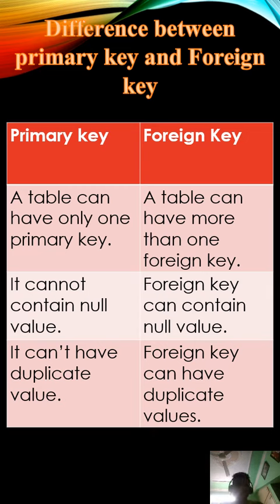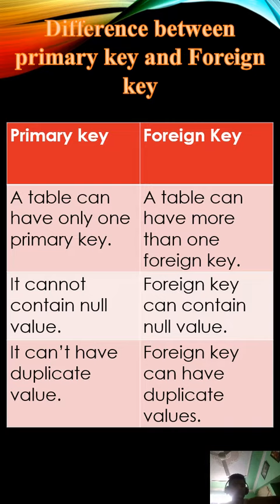In today's short, we are going to learn about the difference between foreign key and primary key. The first point: a table can have only one primary key — just like a country has only one prime minister, a table can have only one primary key. Multiple primary keys are not allowed. But for foreign keys, a table can have more than one foreign key.